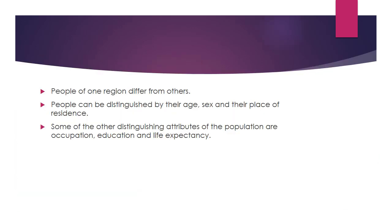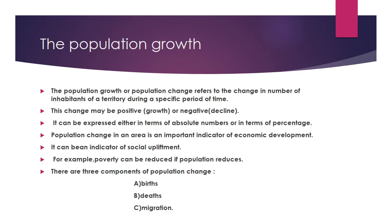Population of one region differs from another because it is unevenly distributed throughout the area. People can be distinguished by their age, sex, and place of residence. Other distinguishing attributes of population include occupation, education, and life expectancy — that is, their lifespan or survival span.